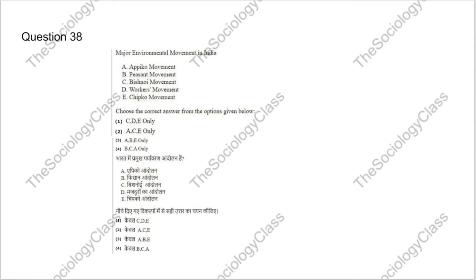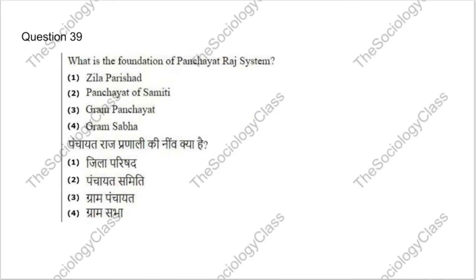Question 38: Major environmental movements in India — select from: Apico movement, Pisan movement, Bishnoy movement, Workers movement, and Chipko movement. The correct answer is B — A, C, and E: Apico movement, Bishnoy movement, and Chipko movement. After this video, search for these three movements on Google and write a brief summary in the comments.